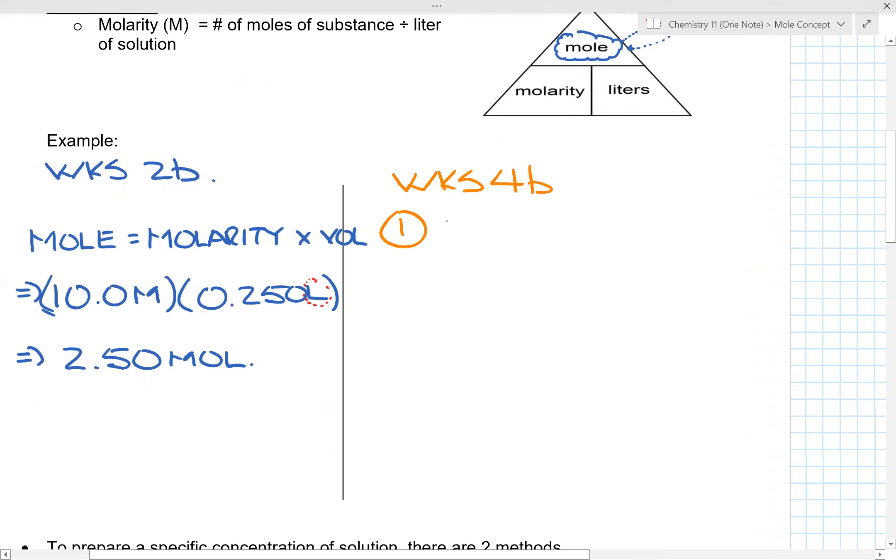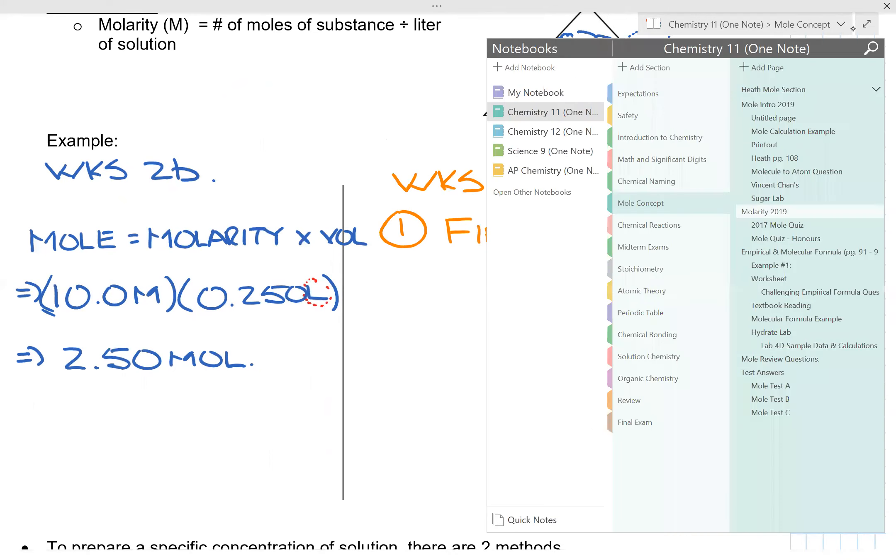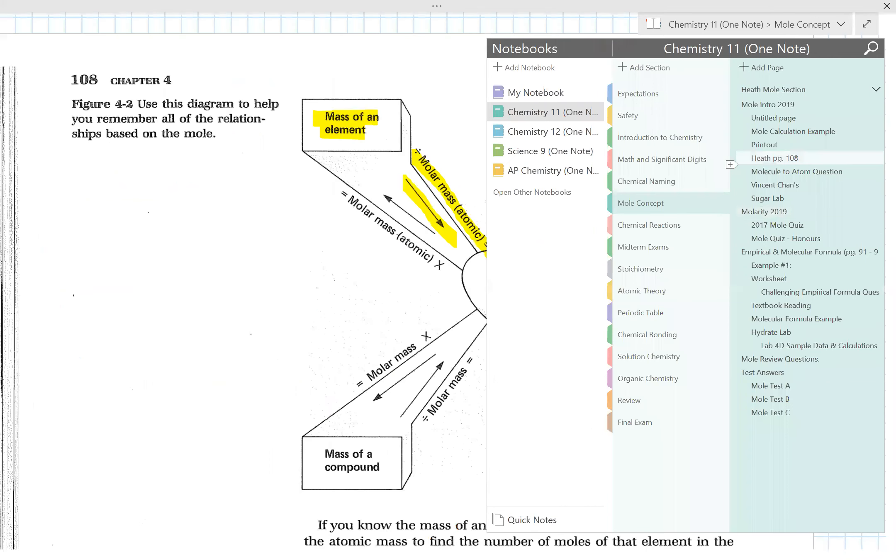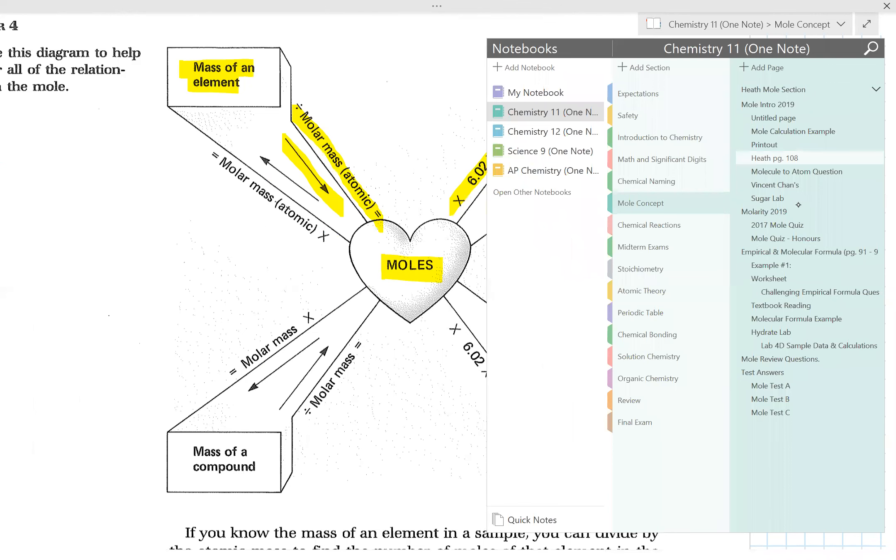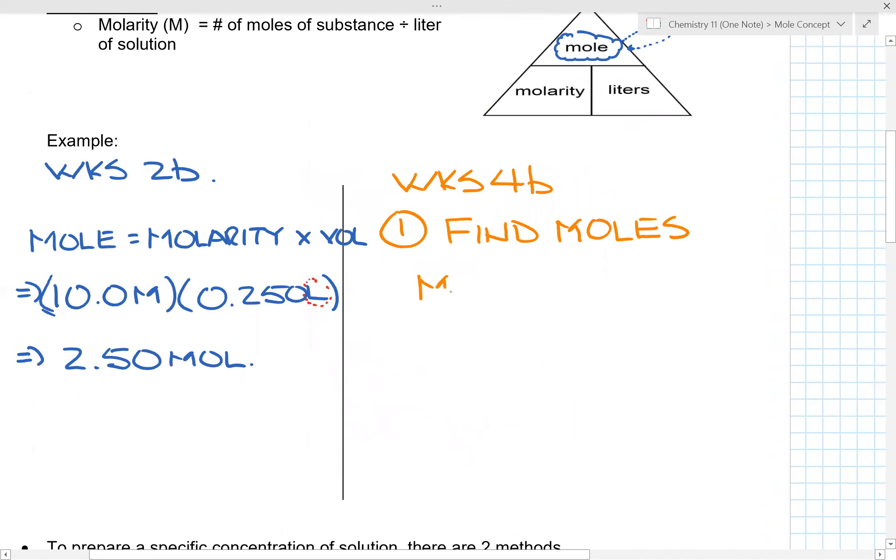The first step is you want to find the moles. Recall when I first started this video lesson, I talked about moles being the heart of chemistry. That also applies to this topic of molarity. So in this case, you want to find moles. Moles equals molarity times liters. You know the molarity, which is 1.50 M times 1.0 liters, and that gives you 1.50 moles.